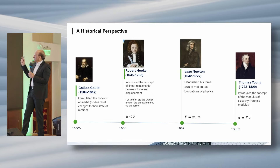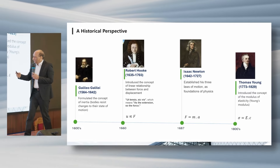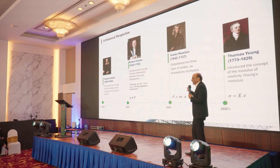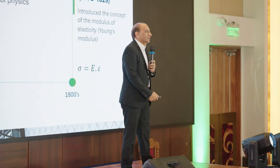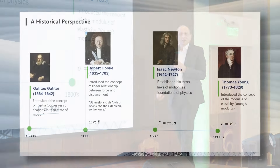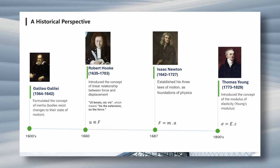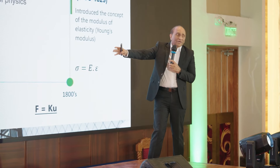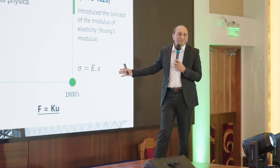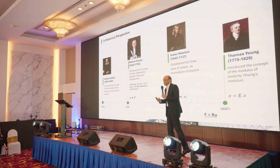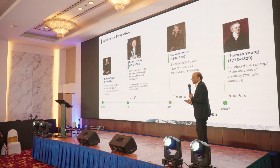The fourth important figure is Thomas Young, who gave us Young's modulus. He is the one who actually completed the force-extension relationship by adding the constant E. It took 200 years between Hooke and Young for this simple equation — F = ku, force equals spring constant multiplied by displacement — to be developed. The concept of stiffness, which is EI, did not exist until Young introduced E. Once E came in, we had the start of the whole mechanics in engineering.